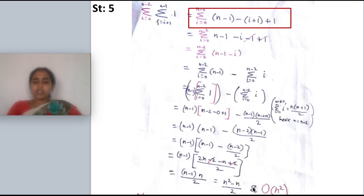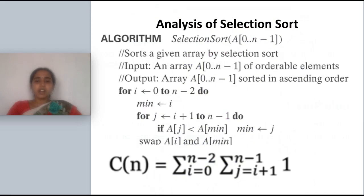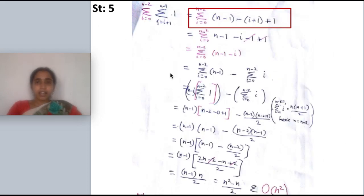This belongs to the efficiency class O(n²), because we can neglect the constant 1/2 and take the polynomial with the highest degree, which is n squared. So the selection sort worst-case analysis is O(n²). In the next lecture series we will see more examples. Stay tuned to Easy Tutorials — thank you.